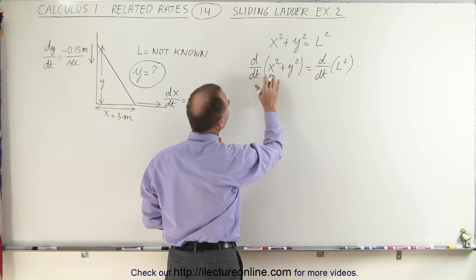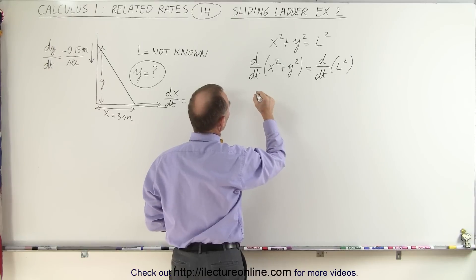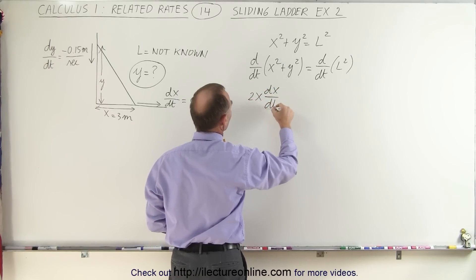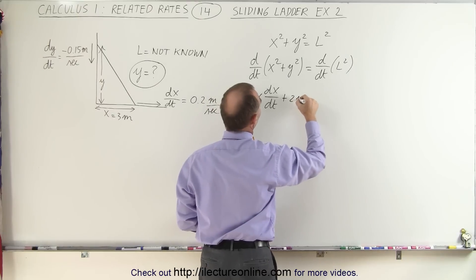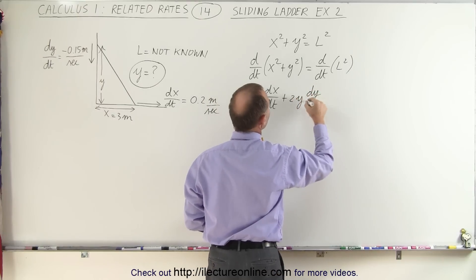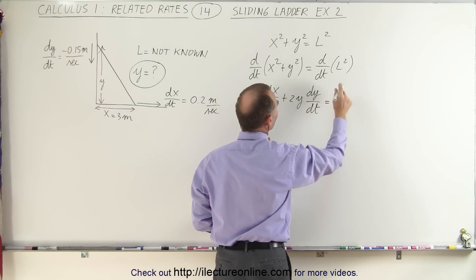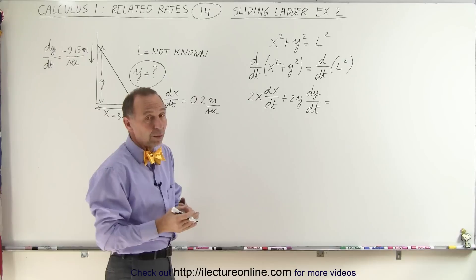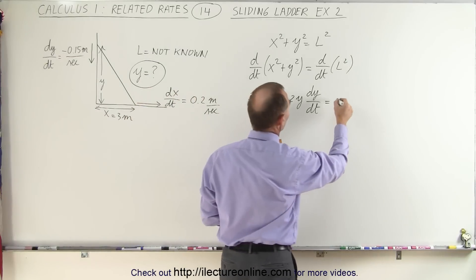On the left side, since both x and y are changing, this will become 2x times dx/dt plus 2y times dy/dt. But on the right side, since L is the length of the ladder and it's not changing, the derivative of L with respect to time must be 0.